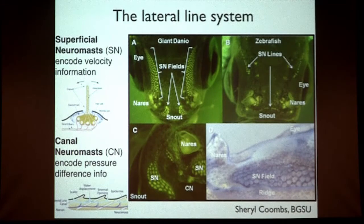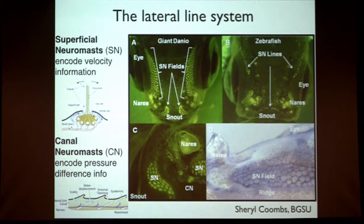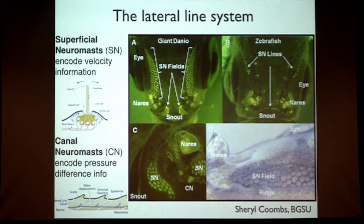The canal neuromasts measure the pressure difference. There are external openings to the fluid environment through which fluid passes, and the difference in pressure between the inlet and outlet of the canal system determines the direction of flow in the canal — that's the signal the neuromast is measuring. The neuromast actually resides inside the canal. Bernoulli's principle is the connection between the measurements, and this is key to understanding why fish have both sub-modalities of the lateral line system.